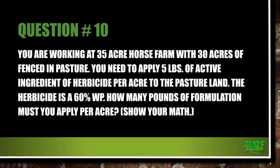Question number ten: you are working at a 35-acre horse farm with 30 acres of fenced-in pasture. You need to apply 5 pounds of active ingredient of herbicide per acre to the pasture. The herbicide is a 60% wettable powder. How many pounds of formulation must you apply per acre? Note: I'm giving you more information than you need — read carefully.